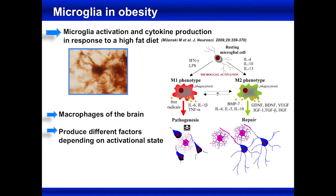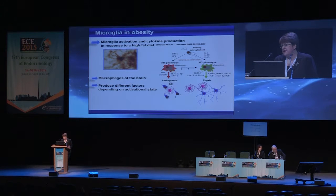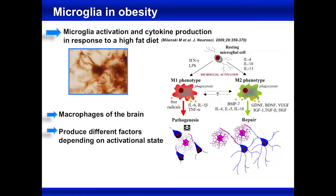Microglia are actually the macrophages of the brain and our first line of defense. Their response depends on their resting phenotype. Microglia are usually defined as either M1 or M2, but there's actually an array of different types in between. What they produce can either be helpful — repairing damage — or pathogenic. So when we see an increase in microglia or microglial response, it can either be helpful or dangerous. We need to keep that in mind.